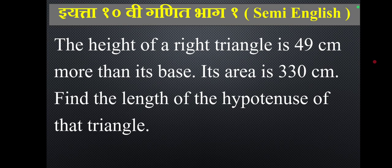Question 3. The height of a right-angled triangle is 49 cm more than its base. Its area is 330 cm². Find the length of the hypotenuse of that triangle.